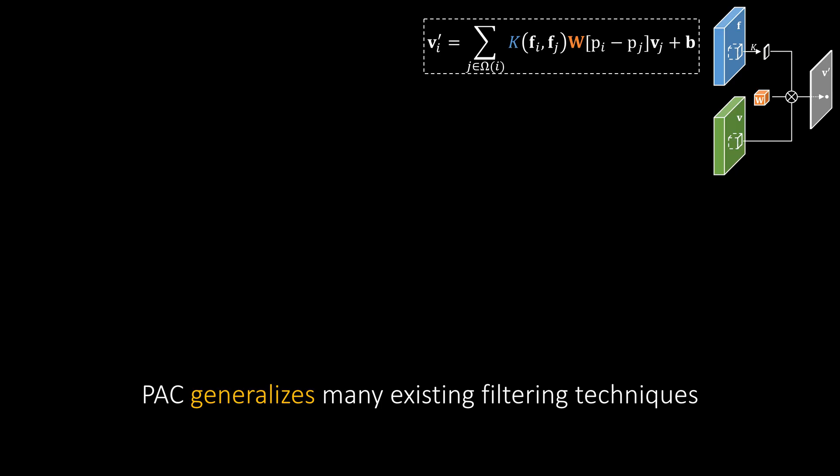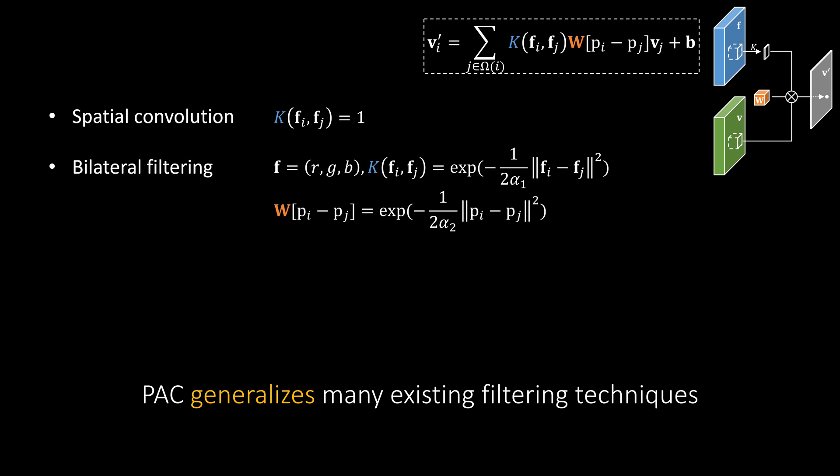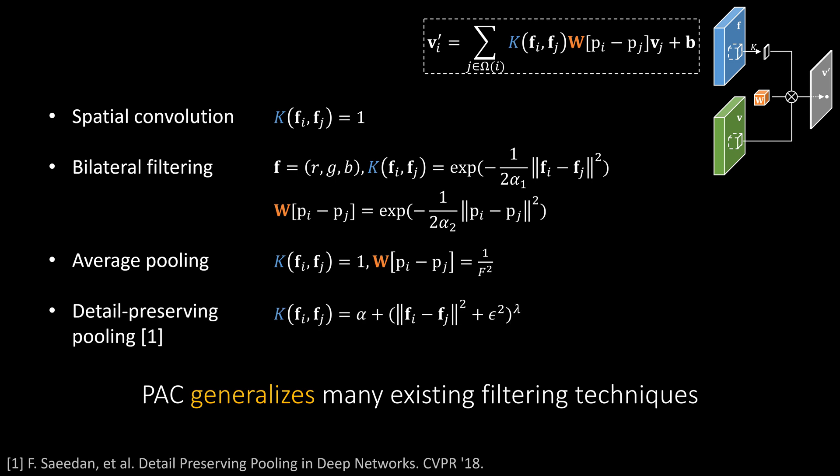Despite being a simple modification, PAC is highly flexible and can be seen as a generalization of several widely used filters. Here are a few examples. It is already obvious from the previous discussion that spatial convolution is a special case of PAC with a constant adapting kernel. By defining F as pixel color and K and W both as Gaussians, PAC can represent bilateral filtering. PAC can also represent pooling operations such as standard average pooling and more recent techniques such as detail-preserving pooling by defining a different kernel function K.